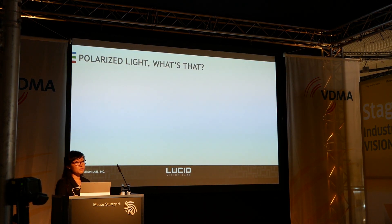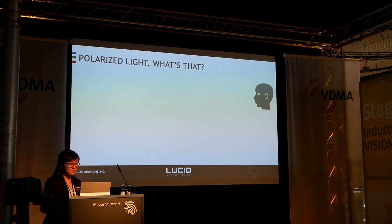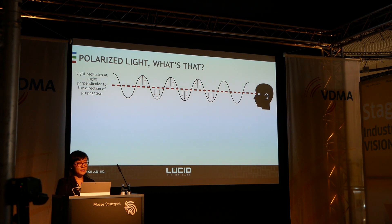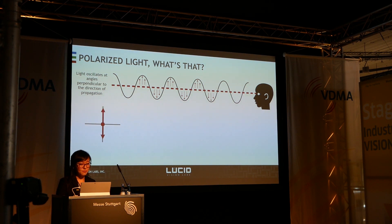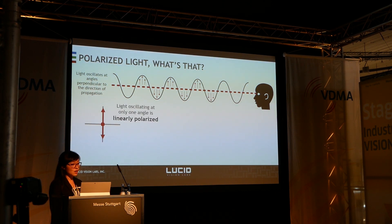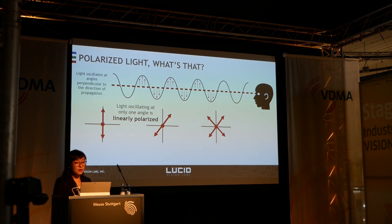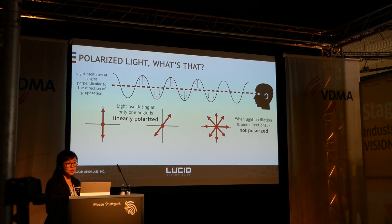Going back to the concept of polarization — what exactly is polarized light? If you consider light as a propagating wave, it oscillates in a certain direction. In the most simplified example, it oscillates up and down and propagates in the direction it's moving. If you're looking at the light front on, you will see the oscillation is up and down — this is called linearly polarized light. It's not constrained to the up and down position; it can be at an angle, and this is also called linearly polarized light. When light oscillates in several directions at the same time, or omnidirectionally, we call this randomly polarized or not polarized.